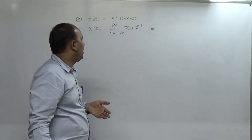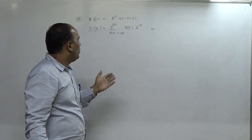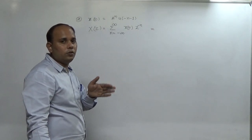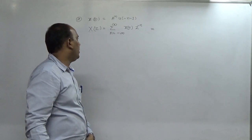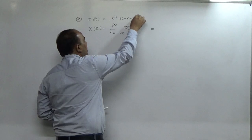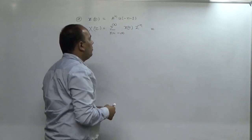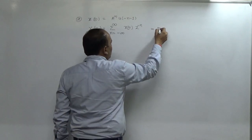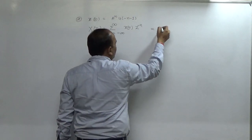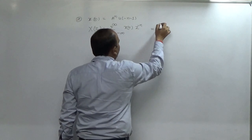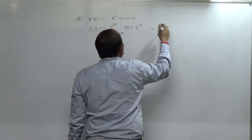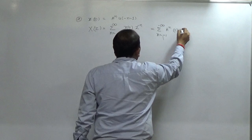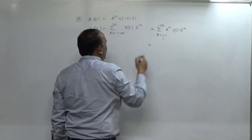For u(n) we take n from 0 to infinity: n = 0, 1, 2, 3, 4 and so on. For u(-n-1) we take n from -1 to -infinity. By definition, u(-n-1) equals 1 for n = -1 to -infinity. So we expand the summation from n = -1 to -infinity of a^n · u(-n-1), where u(-n-1) = 1, multiplied by z^(-n).